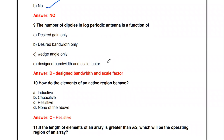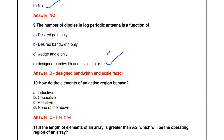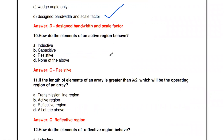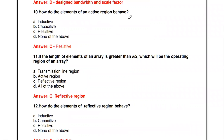The next question: the number of dipoles in a log periodic antenna is a function of what? The answer is designed bandwidth and scale factor. The number of dipoles in a log periodic antenna is a function of the designed bandwidth and scale factor.